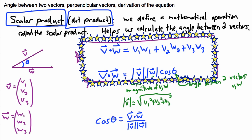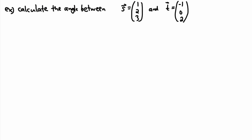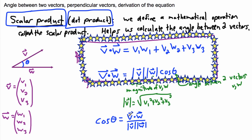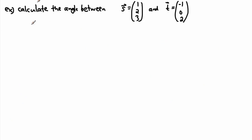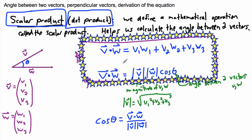Now that we've found out how to use the scalar product or dot product — remember these two equations — we can do another example: calculate the angle between two 3D vectors. All I have to do is remember that if I want the angle between them, it's v dot w over |v||w|. So the cosine of the angle between them equals s dot t divided by the length of vector s times the length of vector t.